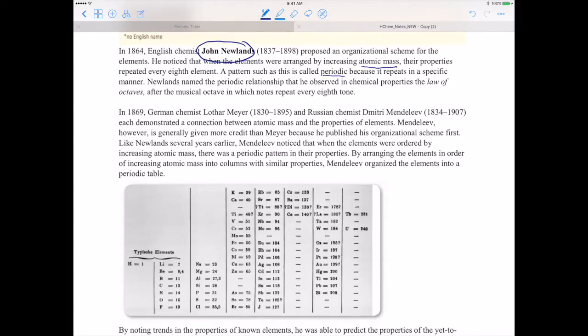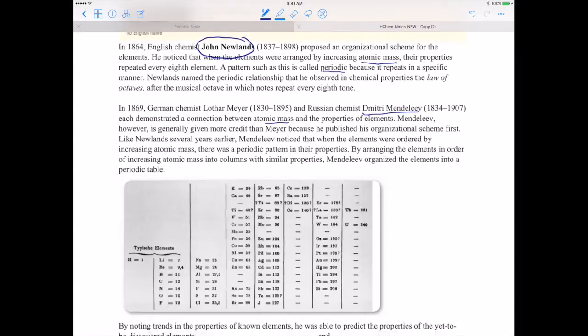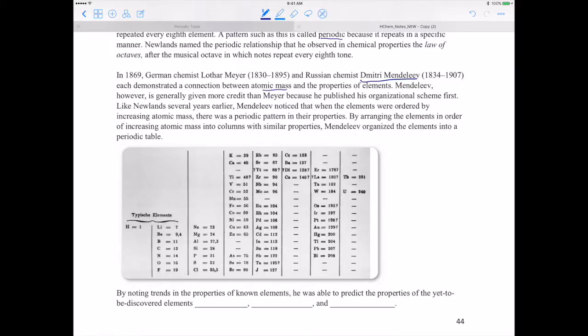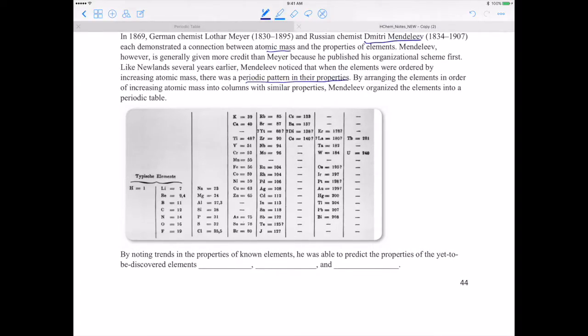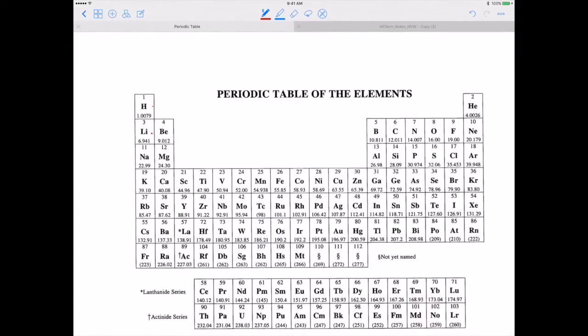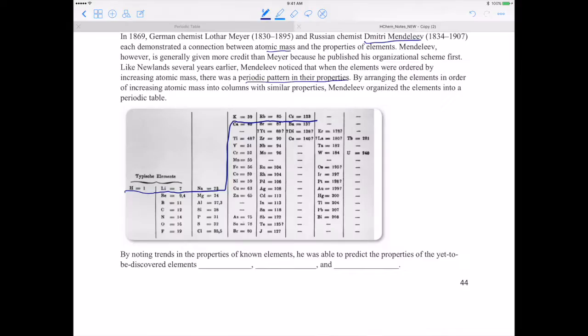In 1869, German chemist Lothar Meyer and Russian chemist Dmitri Ivanovich Mendeleev each demonstrated a connection between atomic mass and the properties of the elements. Mendeleev, however, is generally given more credit than Meyer because he published his organizational scheme first. Like Newlands several years earlier, Mendeleev noticed that when the elements were ordered by increasing atomic mass, there was a periodic property or pattern in their properties. By arranging the elements in order of increasing atomic mass in columns with similar properties, Mendeleev organized the elements into a periodic table. This doesn't look like today's periodic table, but you can see some resemblance. See, on this first row we have hydrogen, lithium, sodium, potassium, rubidium, and cesium. Take a look at our periodic table: hydrogen, lithium, sodium, potassium, rubidium, and cesium.